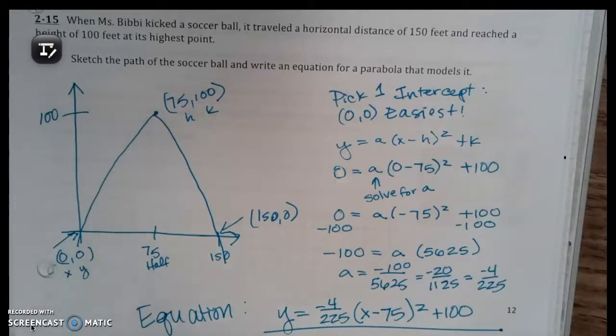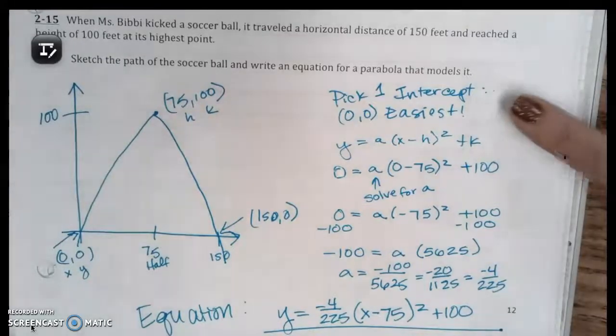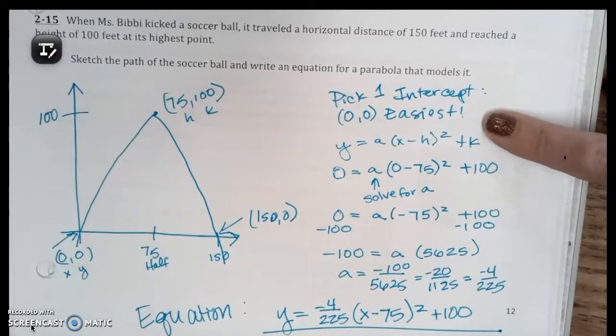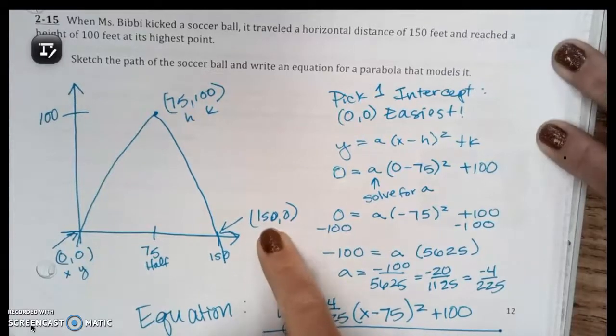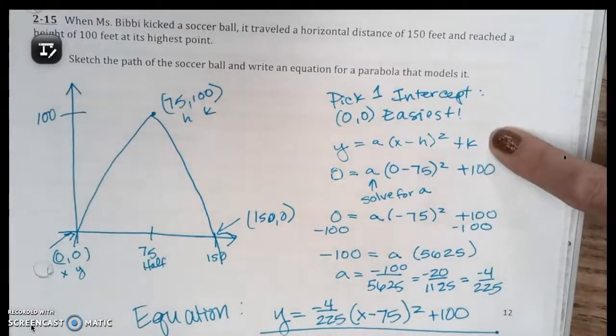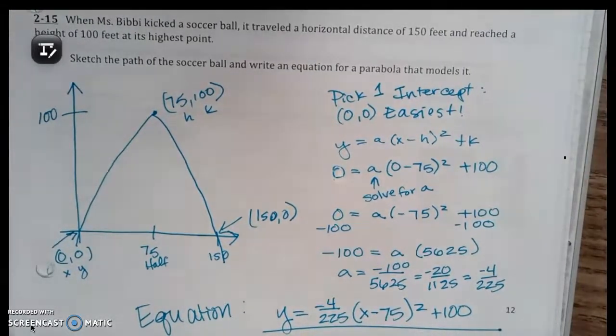So I picked one intercept. I picked (0,0) because it's easier, but you could pick the other one and see if you get the same answer. So pick (150,0) if you want. Then start with the original equation. Some of you can skip that because you have it memorized. You've seen it so many times now, right? And then you're just going to plug in. I plugged in the (75,100) and then I plugged in the point (0,0).